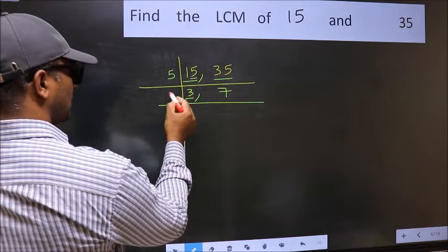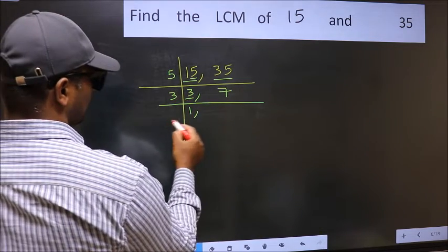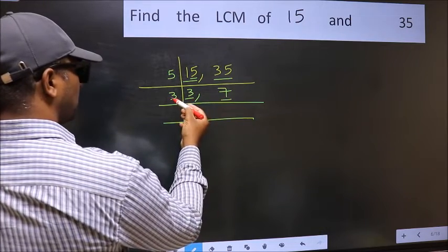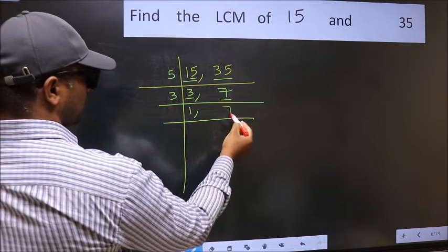Now here we have 3. 3 is a prime number, so 3 times 1 is 3. The other number 7 is not divisible by 3, so you write it down as it is.